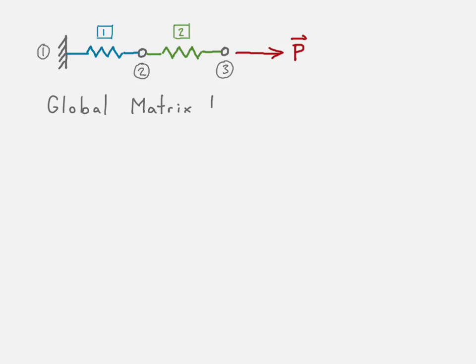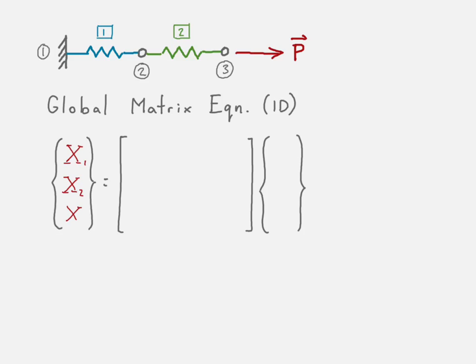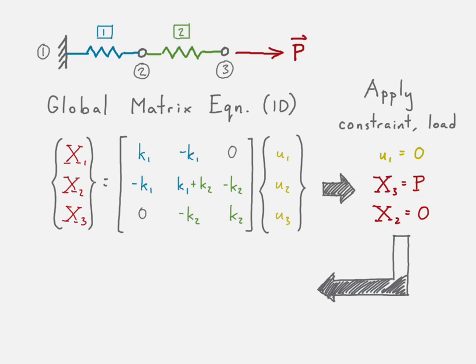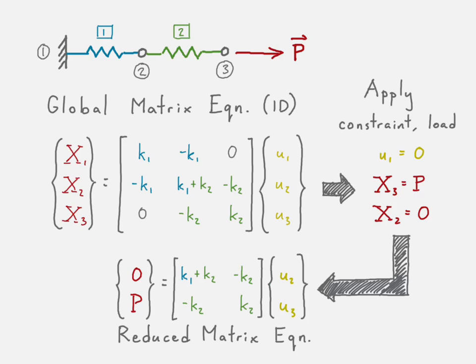Let's go ahead and draw out the problem and take a look at our global matrix equation. In one dimension, we have one degree of freedom per node, and you can see how element one gets populated connecting nodes one and two, while element two populates degrees of freedom two and three. If we were to solve through this problem, we would constrain node one, then say the force at node three is P and the force at node two is zero, and then create our reduced matrix equation. We can solve for our displacements at nodes two and three in the horizontal direction — assuming this whole problem takes place in one dimension only.